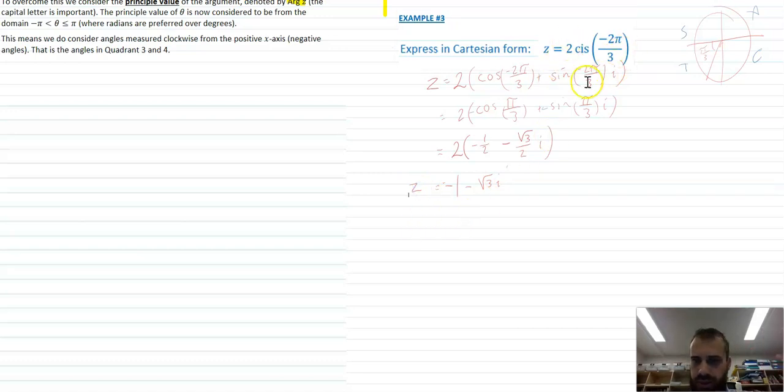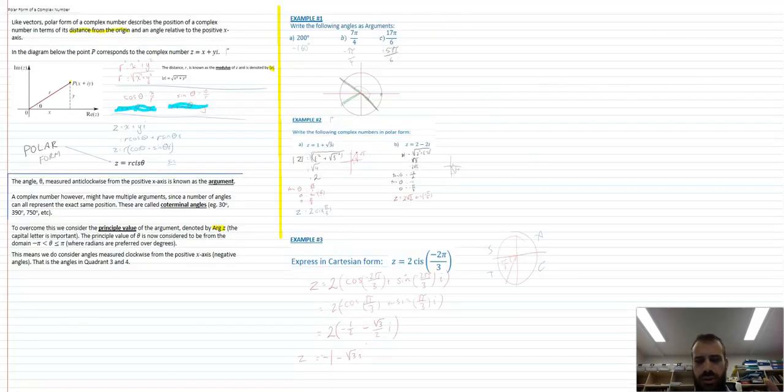There is our polar complex number in Cartesian form. There's a lot more I want to say about polar form of a complex number, but that's long enough. Go away. Go and do some questions. Go and do some work on those. And then we'll come back and do some other stuff.